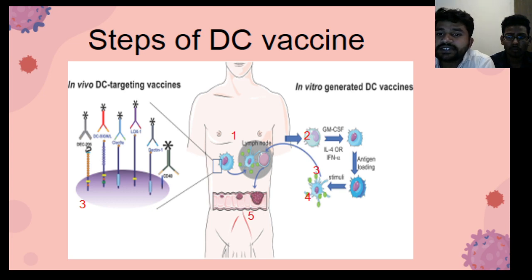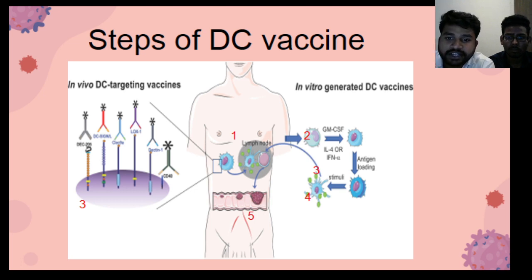Dendritic cell vaccines target specific receptors. As we can see in this slide, these include CD14 and Dectin-1, among many others.